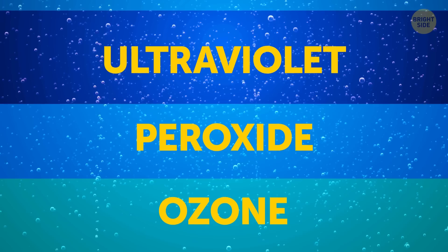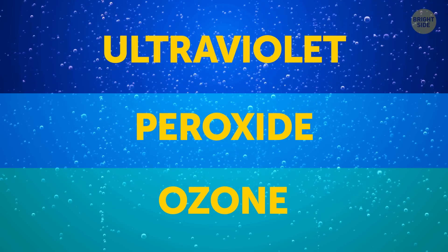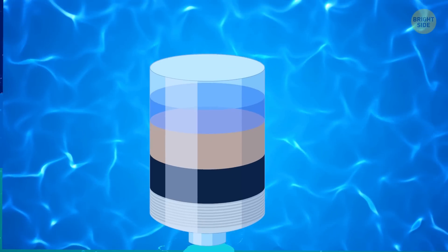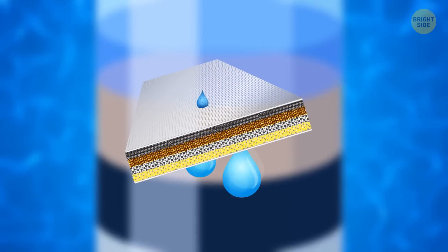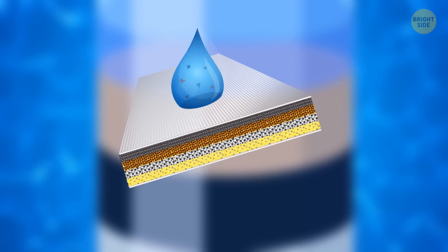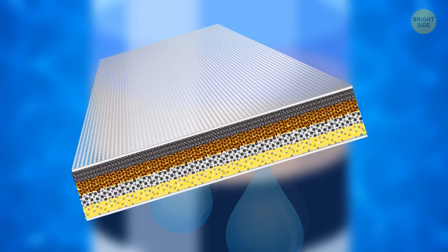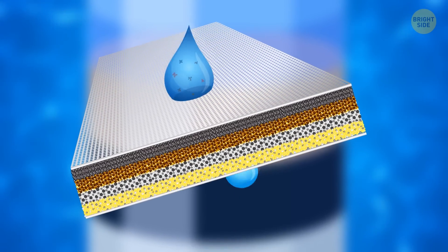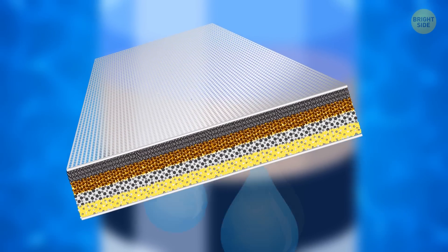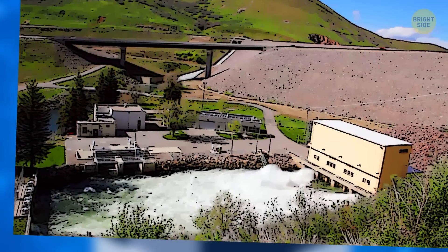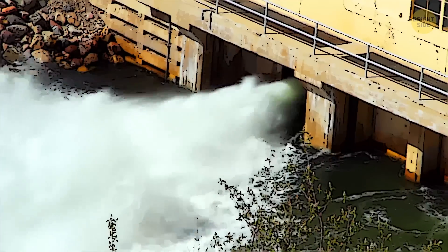Instead of chlorine, ultraviolet, peroxide, or ozone can be utilized. Another way to purify the water involves pushing it through a special treatment tank, or humus tank, where even the tiniest particles and bacteria get stuck in the filtering matter, while the water freely runs onwards. It's then released back into nature, and the cycle continues.